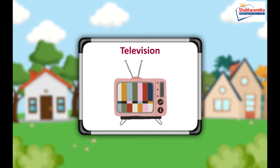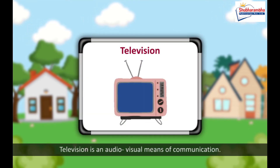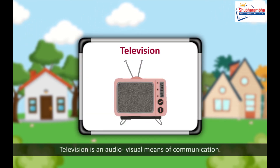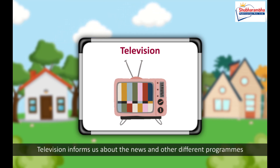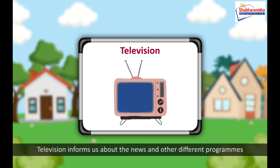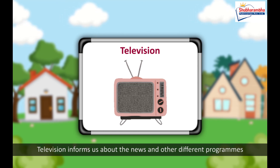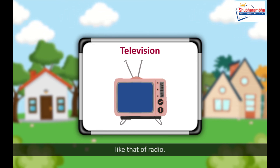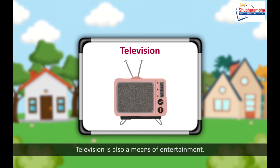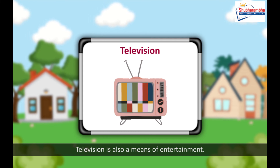Television. Television is an audio-visual means of communication. On a television, we can see moving pictures with sound. Television informs us about news and other different programs like that of radio. Television is also a means of entertainment.